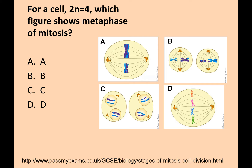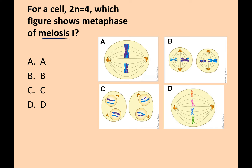For a cell where 2N equals 4, which figure shows metaphase of mitosis? Hopefully you picked D. You have four chromosomes because 2N equals 4, and in mitosis we split the sisters. For a cell with 2N equals 4, which shows metaphase of meiosis I? You should pick answer A because you're lining up homologous pairs, and you still have 1, 2, 3, 4 chromosomes.